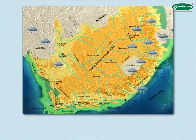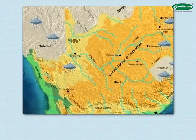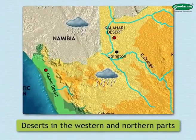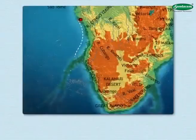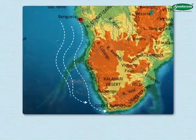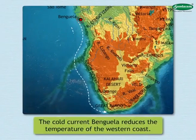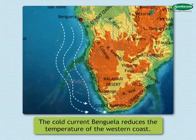Due to considerably low rainfall, deserts have formed in the western and northern parts of the country. The Benguela cold current flows along the western coast. This cold current reduces the temperature of the western coastal region.